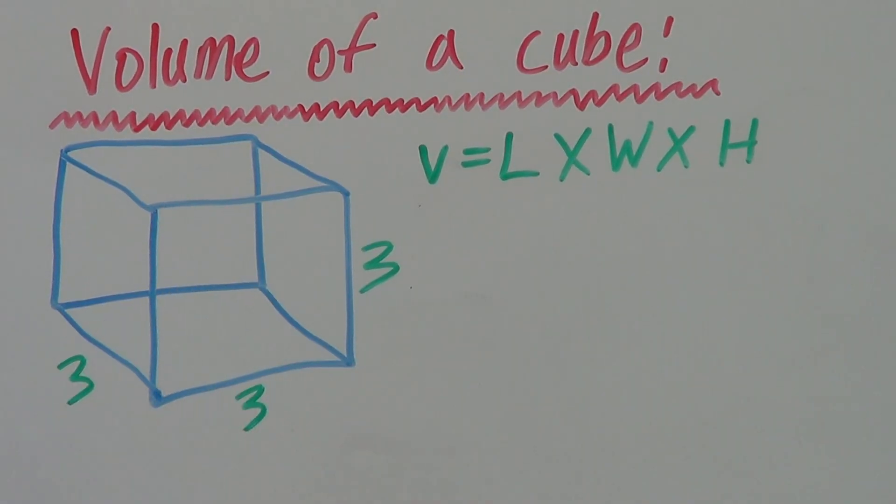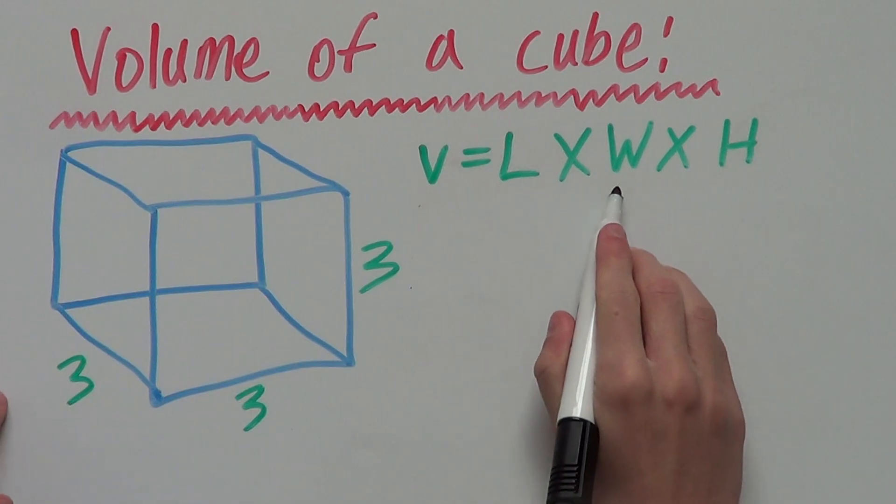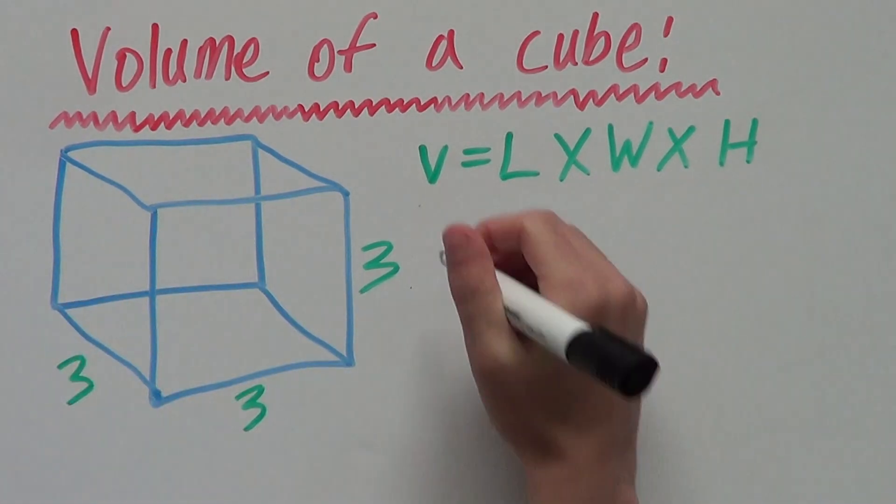We have our cube here, and we want to work out the volume. Whenever you work out the volume or the area of something, all you have to do is use the formula. The formula for the volume of a cube is volume equals length times width times height.